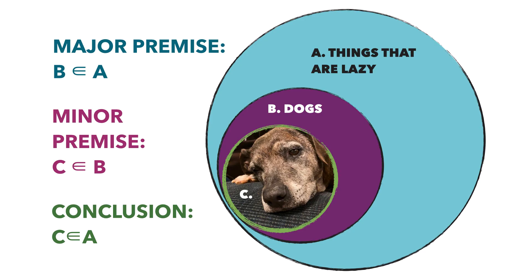For those of us who aren't math enthusiasts, let's think about this as a set of overlapping circles. Our larger, judgy set is things that are lazy, and it completely contains the set of dogs — that's what makes our major premise. The smallest set, Sophie, is completely contained in the set of dogs — that's the minor premise. Since all dogs are located in the major premise, and Sophie is 100% dog, we can conclude that she is a lazy, sleepy old pupper.